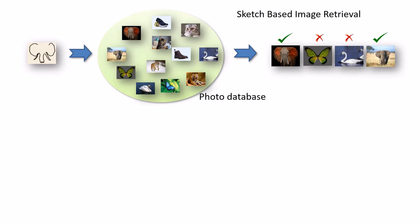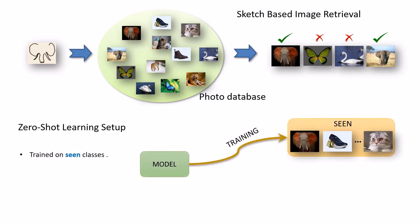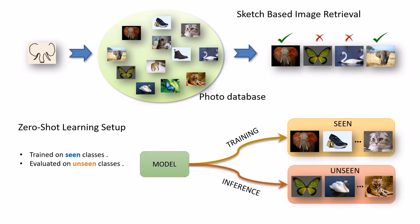However, sketches are notoriously difficult to collect. A practical scenario for application of SBIR is the zero-shot paradigm which examines the data scarcity issue from a category transfer perspective. Here, a model is trained on a certain set of classes but evaluated on another completely disjoint set of classes without any additional data provided during inference.